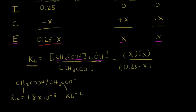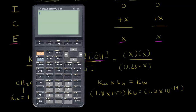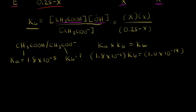Our goal is to find the Kb for the conjugate base. For a conjugate acid-base pair, Ka times Kb is equal to Kw, the ionization constant for water. Plugging in: 1.8 times 10 to the negative 5 times Kb equals 1.0 times 10 to the negative 14. Solving for Kb: 1.0 times 10 to the negative 14 divided by 1.8 times 10 to the negative 5 gives us 5.6 times 10 to the negative 10. So Kb is equal to 5.6 times 10 to the negative 10.